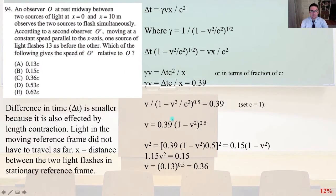94. An observer O, this one, this problem took me longer than any other one to solve probably on the exam. An observer O at rest midway between two sources of light at x equals 0 and x equals 10 meters, observes the two sources to flash simultaneously. According to a second observer, O prime, moving at a constant speed parallel to the x-axis, one source of light flashes 13 nanoseconds before the other. Which of the following gives the speed of O prime relative to O?